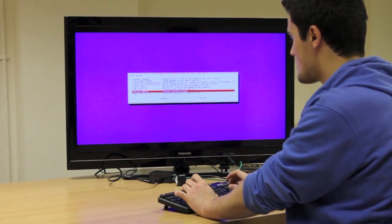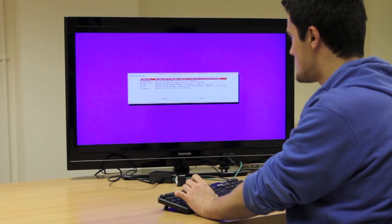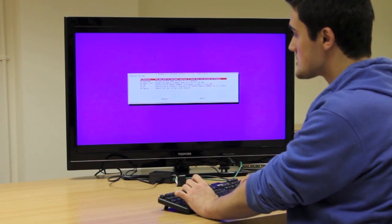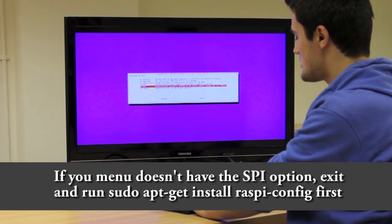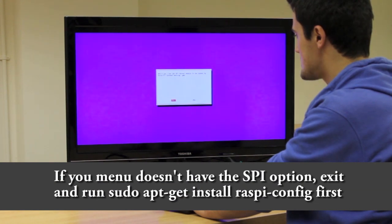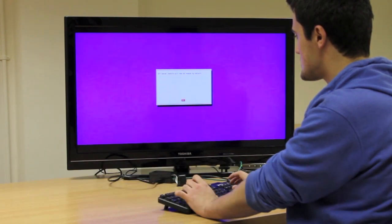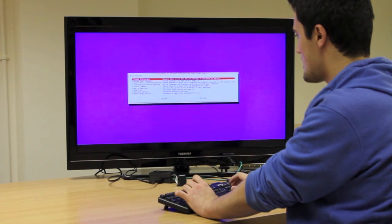Then we're going to go down to the eighth option, advanced options, and then in advanced options, go down to the fifth option, SPI, select it, and set it to yes.